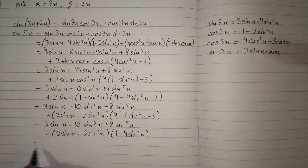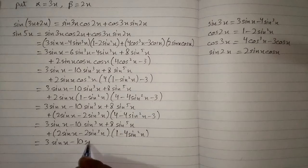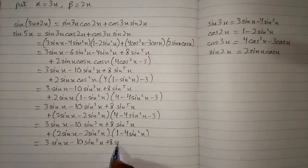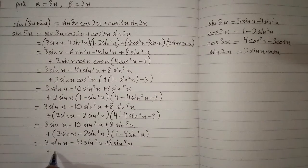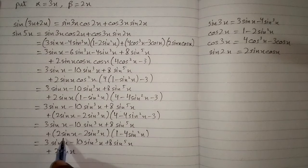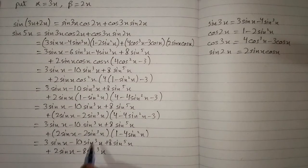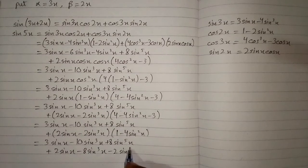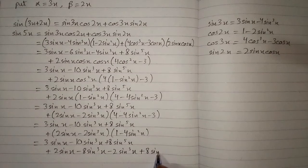Now we expand this bracket: 3 sine x minus 2 sine x minus 4 sine cubed x plus 8 sine to the power 5x, plus 2 sine x multiplied by 1 is 2 sine x, and 2 sine x multiplied by minus 4 sine squared x is minus 8 sine cubed x. Then minus 2 sine cubed x multiplied by 1 is minus 2 sine cubed x, and plus 8 sine to the power 5x.